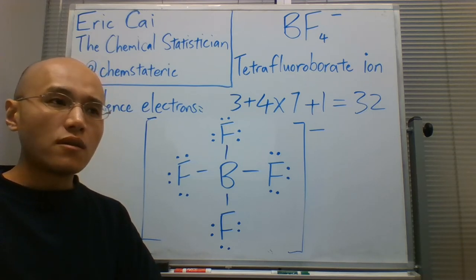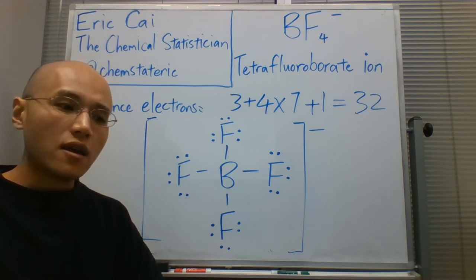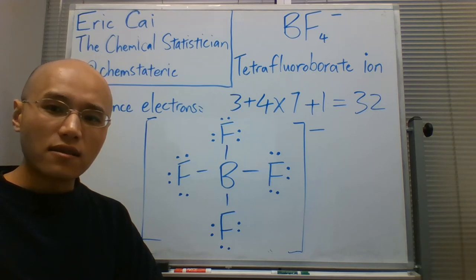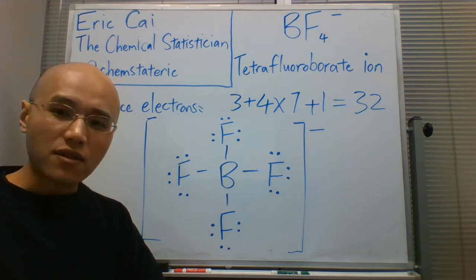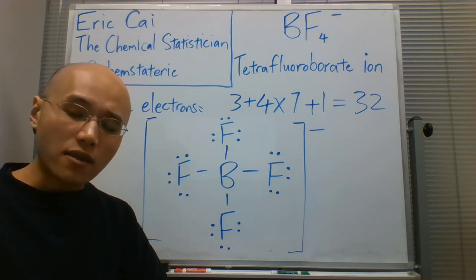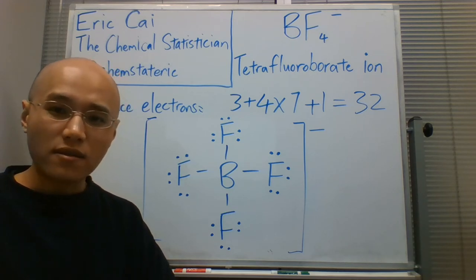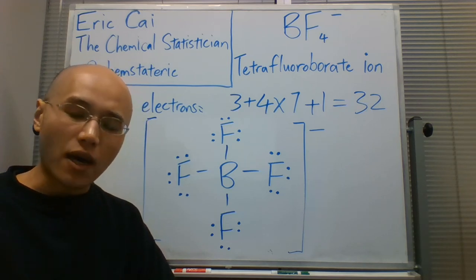So the main message to take away from this comparison is that the incomplete octet does not always apply to boron, and we have to examine how boron behaves on a molecule by molecule basis. So the incomplete octet applies to boron in boron trifluoride, but the stable octet applies to boron in the tetrafluoroborate ion.